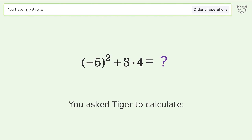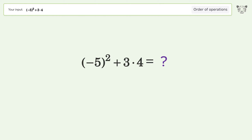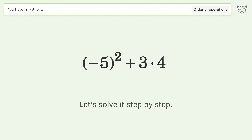You asked Tiger to calculate. This deals with the order of operations. The final result is 37. Let's solve it step by step.